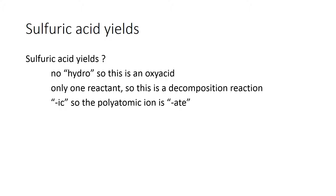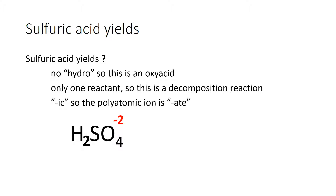The acid name ends in IC, so the polyatomic ion must end in ATE, so we're looking for sulfate. We write the H for the acid and sulfate after that. Sulfate has a minus two charge, which means we're going to need two hydrogens to make our sulfuric acid.